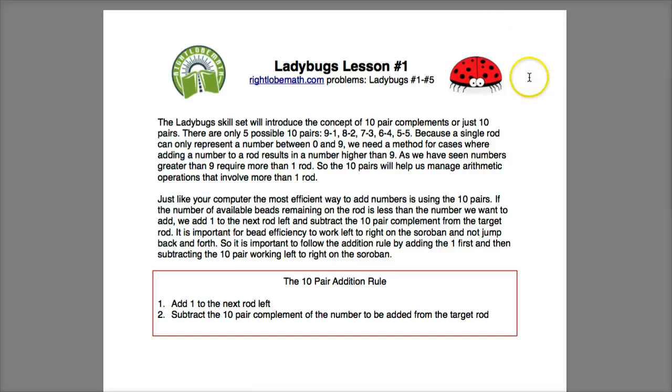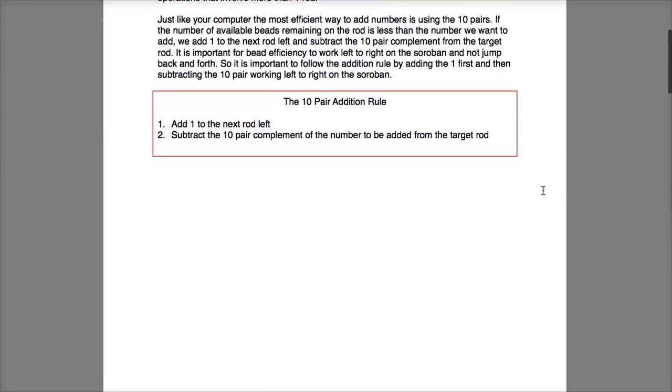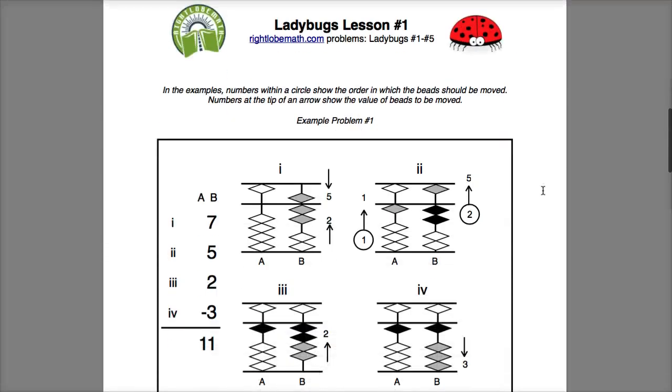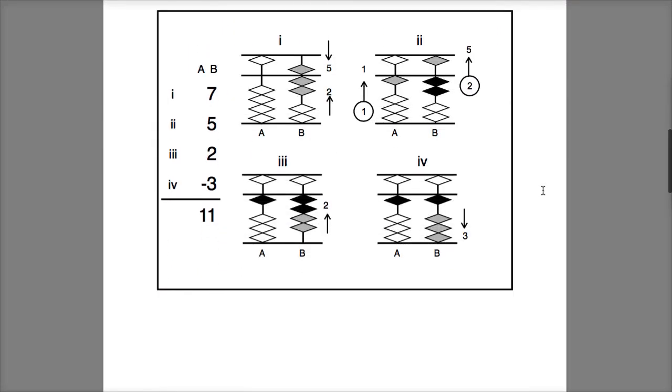So we have a simple rule called the ten pair addition rule that we will use to handle the Ladybug problems. It simply states: add one to the next rod left and subtract the ten pair complement of the number you want to add from the target rod. So let's jump into some problems and see how we would use the ten pair addition rule.